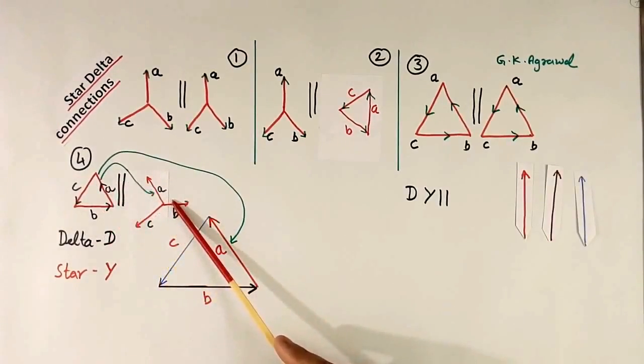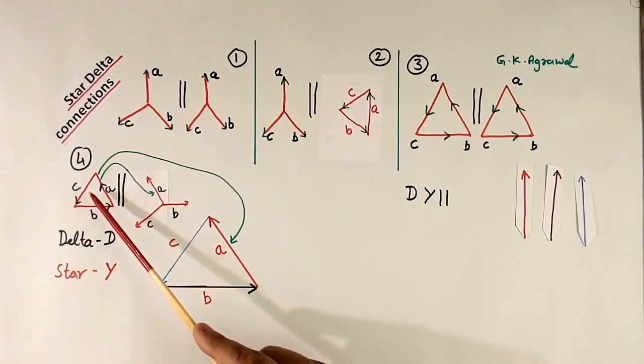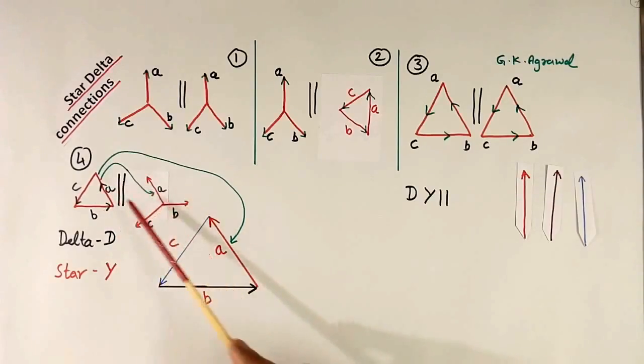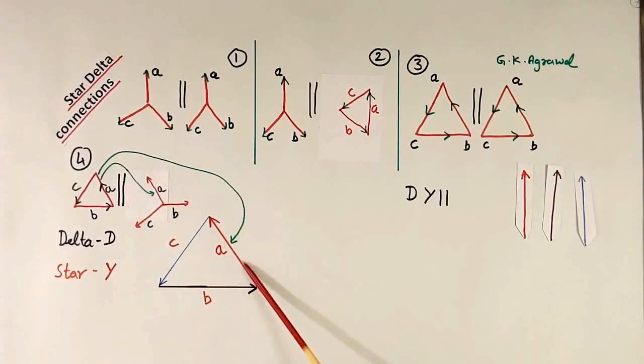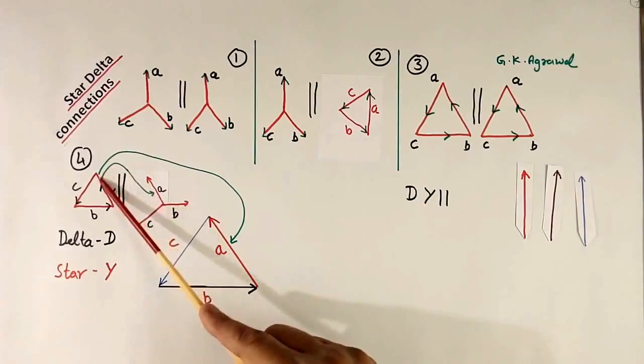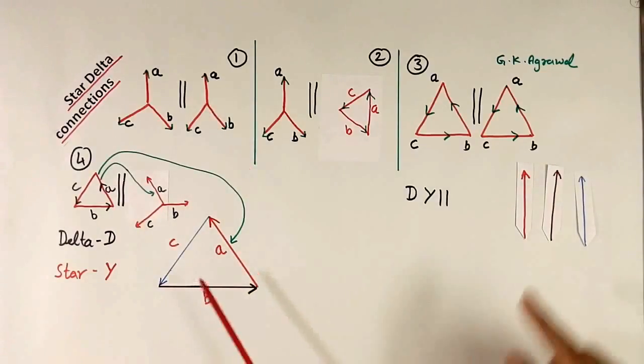Delta-star connection. Delta also called D, star also called Y. So we can call it DY. Now this is A phase of primary. This I have shown here. This is nothing but this. This is secondary of phase A. It will have same direction. Now here again I have shown like this, not like this. How this happens?